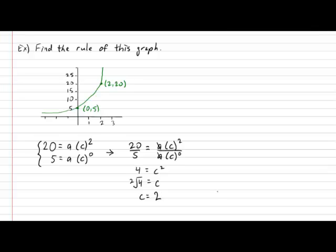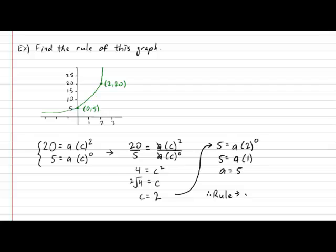Finally, we can't forget about the a value. Using the second rule with our newly found c: 5 equals a times 2 to the 0, which gives us 5 equals a times 1. Therefore a equals 5. So the rule for this graph is y equals 5 times 2 to the x, and there is no k value because the horizontal asymptote was located at y equals 0.